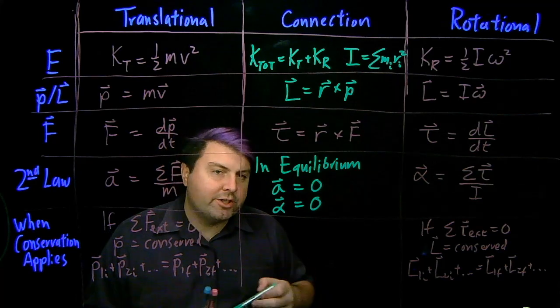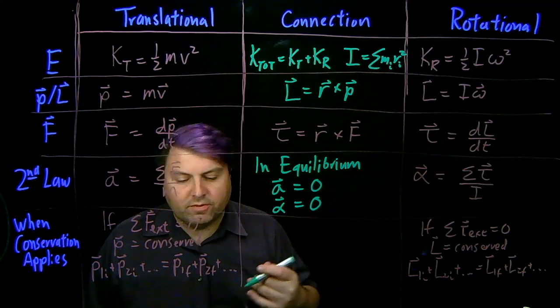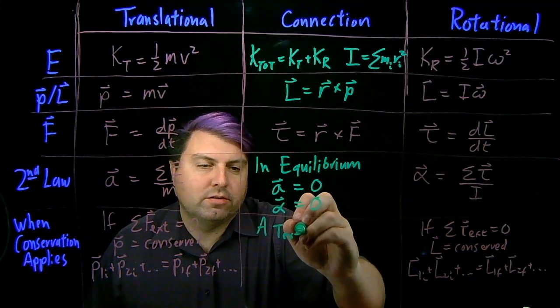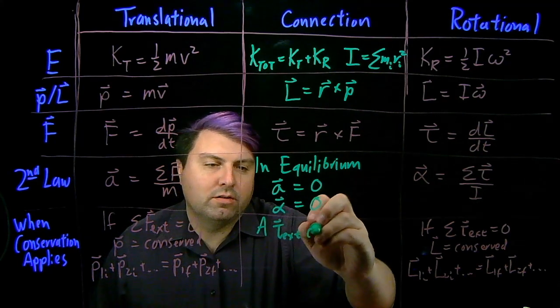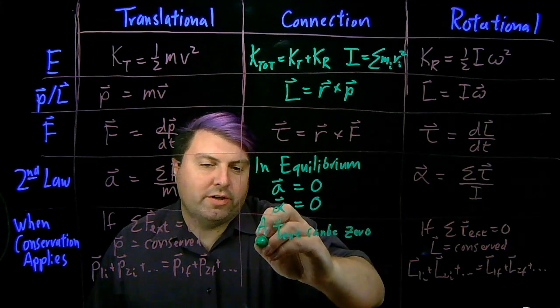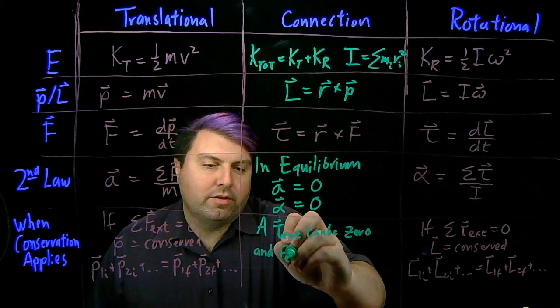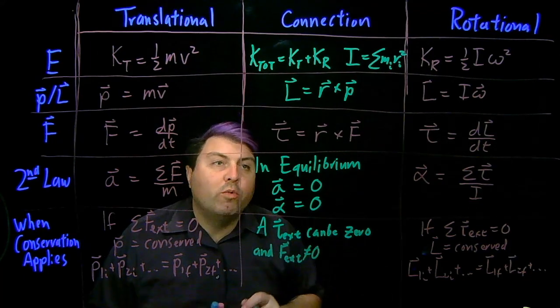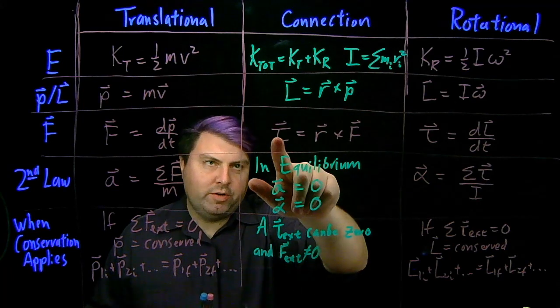So the connection for these is again, something useful for solving. And we can have a torque external and force external not equal to zero. Well, when do we have a case where our torque can be zero, but force is not zero?